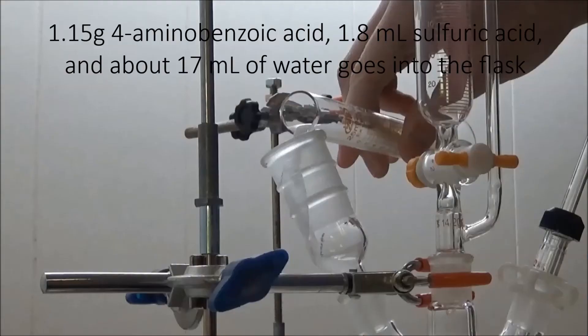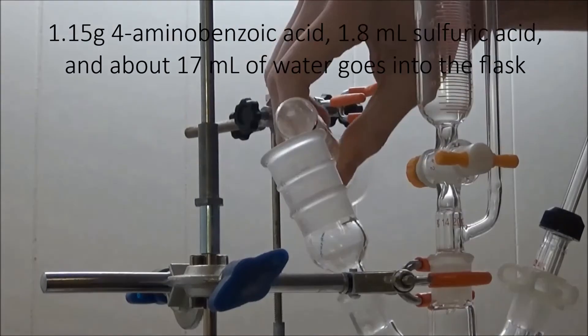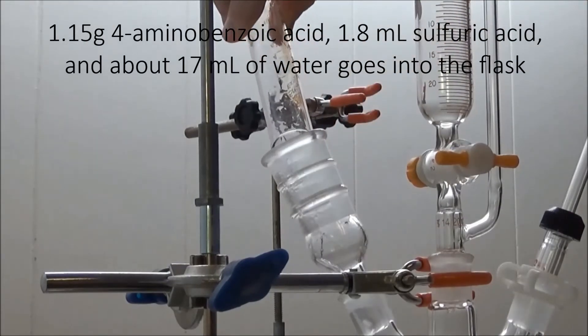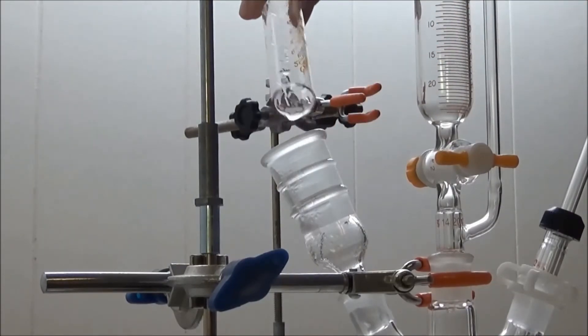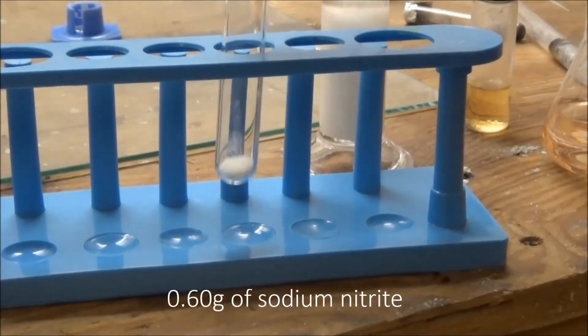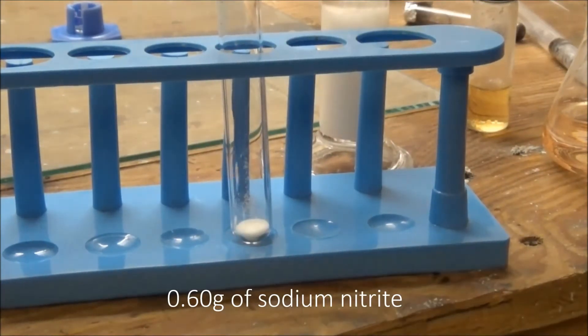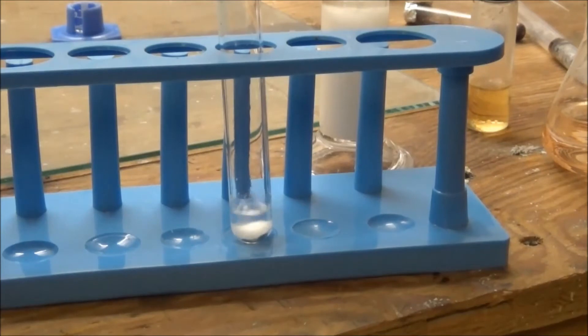I added this to a 50 milliliter three-neck flask and washed it down with some water, bringing the total volume up to around 20 milliliters. I then measured out 0.6 grams of sodium nitrite in a test tube and added about 2 milliliters of water to dissolve it.